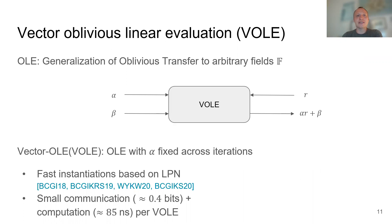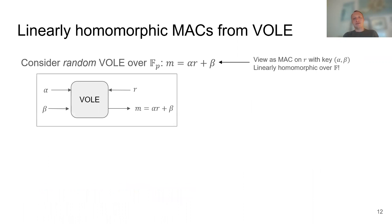This vector OLE is useful for building a commit-and-prove proof system. If you tilt your head a little, a random vector OLE looks like a MAC on the value R: if you give M and R to the prover, and alpha and beta to the verifier, you get an information-theoretic MAC on R. The prover can only open to one value later. Since alpha is fixed across multiple instances, you can make this linearly homomorphic.